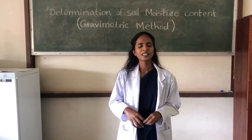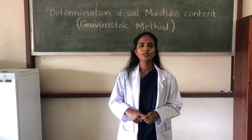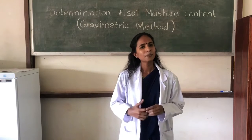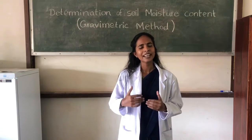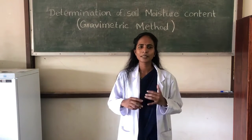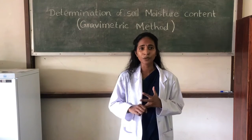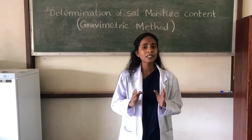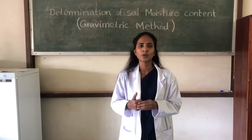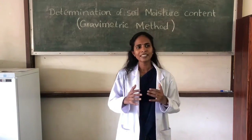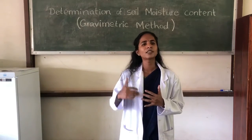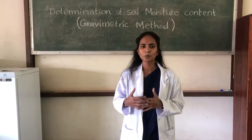The gravimetric method is the direct method for determination of soil moisture content. Compared with other methods, this method has several advantages, especially its simplicity and accuracy. This method is also used to calibrate other methods. Though it is a time-consuming and tedious process, it is the widely practiced method.